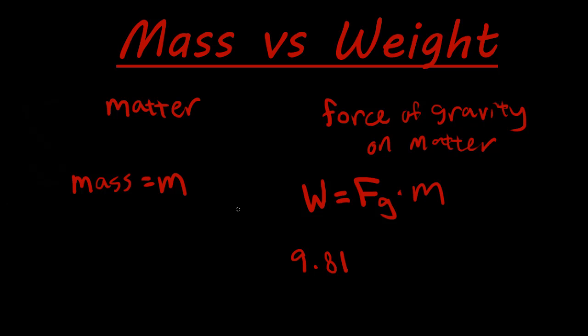So that's the main difference between mass and weight. Mass is the amount of matter in an object and then weight refers to the force of gravity acting on that matter.